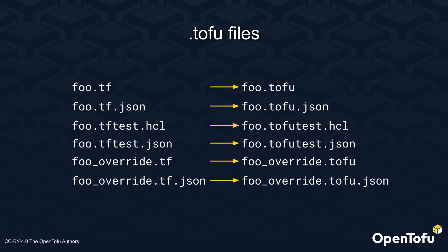Of course, this also works for other file types used by OpenTofu, such as the JSON variant, test files, or override files. The only exception to this behavior in the current 1.8.0 alpha 1 version are .tfvars files, which are not supported as .tofu vars yet.